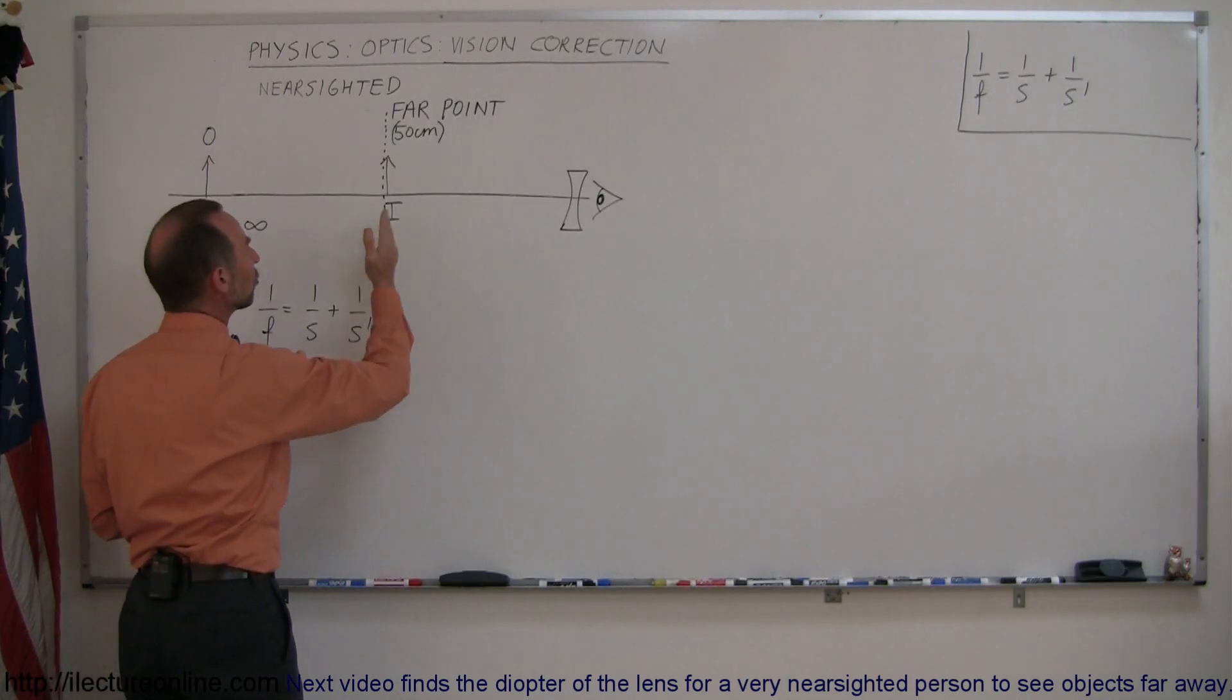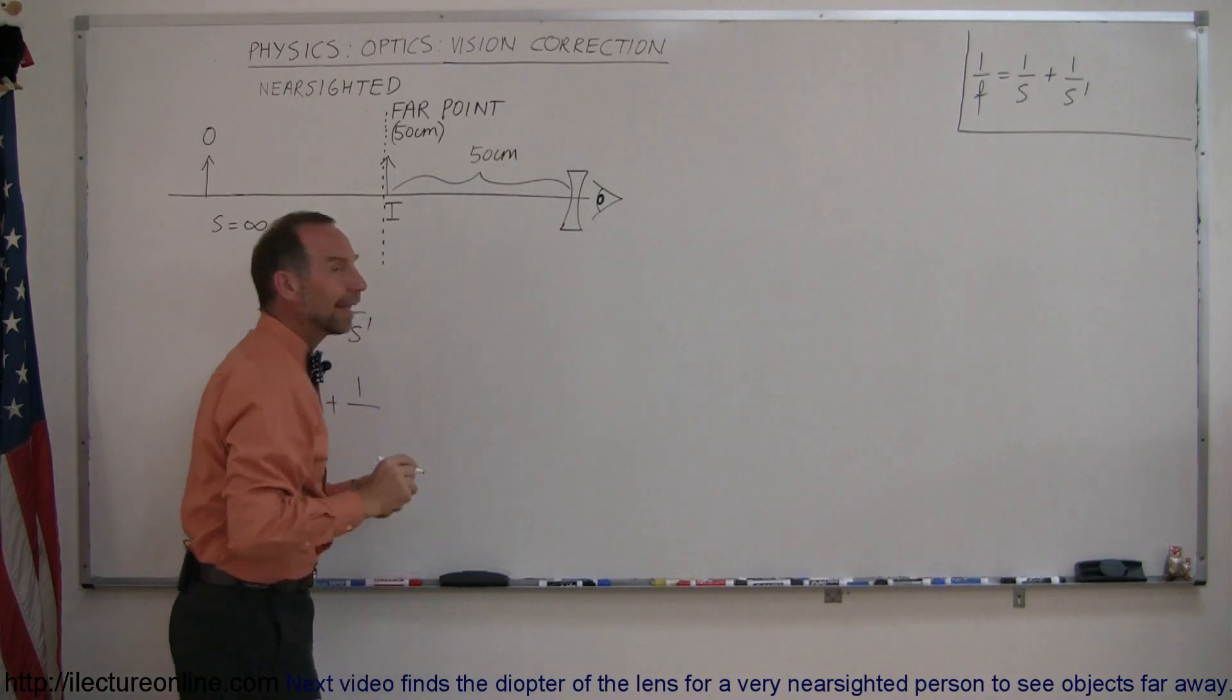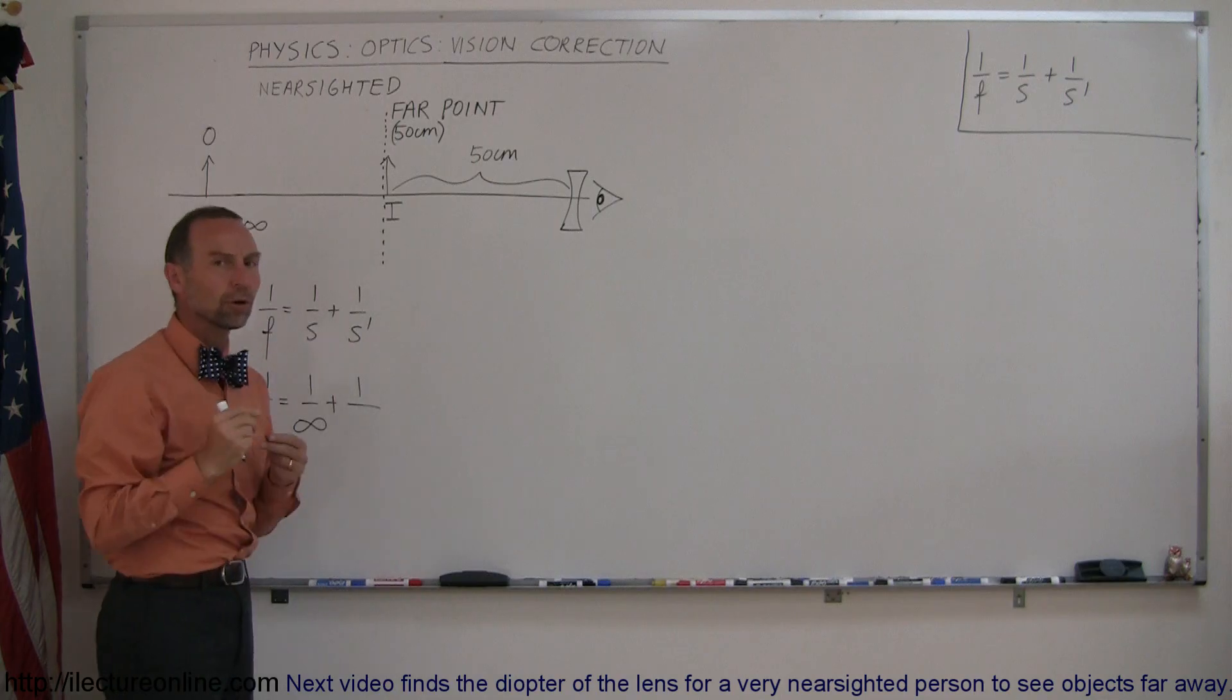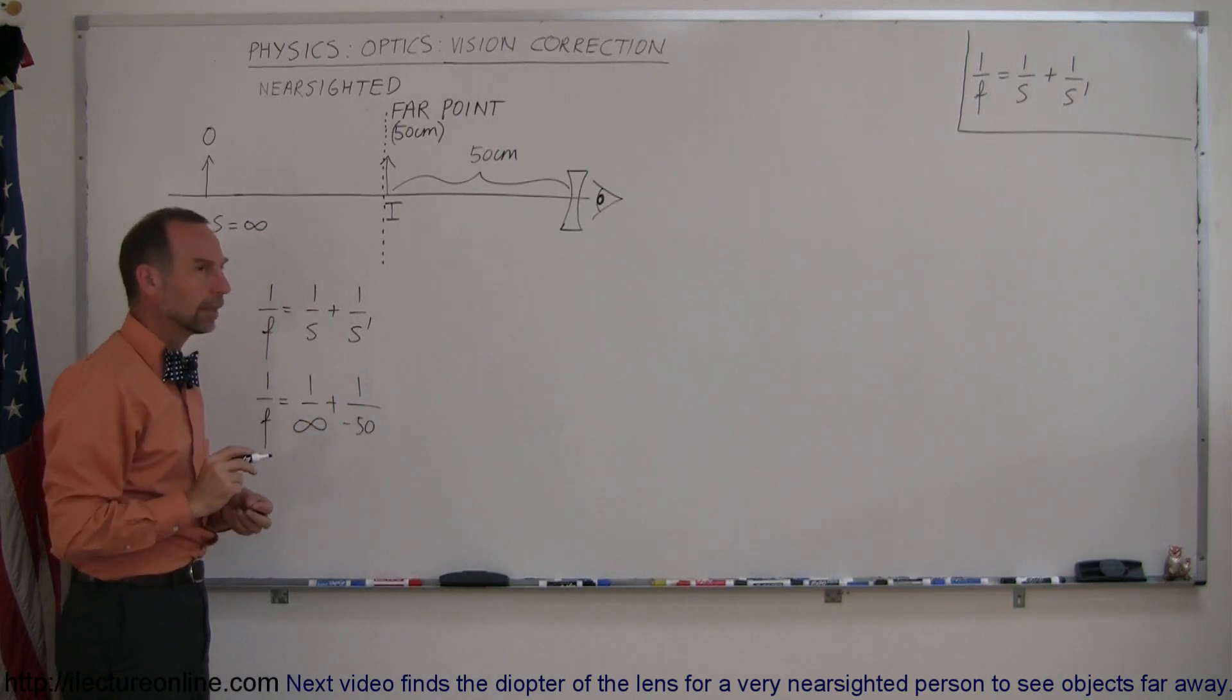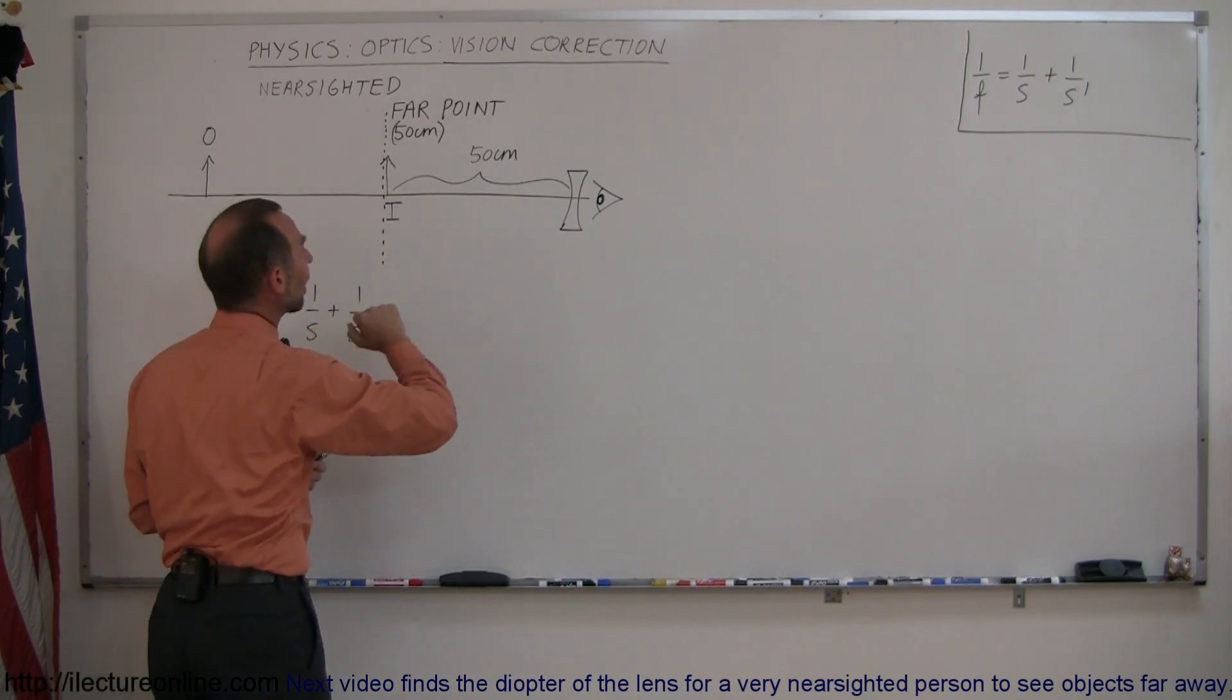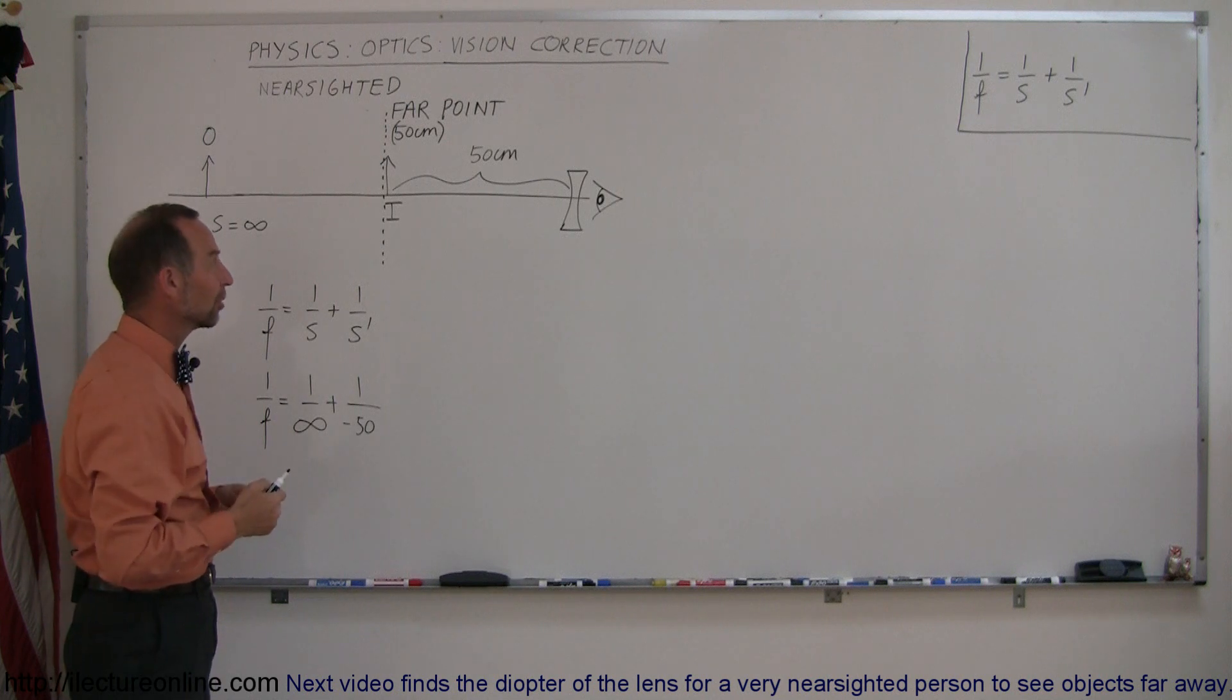Now s prime is the image distance, and of course that has to be 50 centimeters. But notice also that the image is in front of the lens, which makes that a virtual image, which means that the image distance is a negative distance. So s prime is a negative 50 centimeters, so we plug in minus 50 centimeters. It's a virtual image. That means people who have corrective vision and if they're nearsighted and they put on a diverging lens, they're actually looking at the world as virtual images.